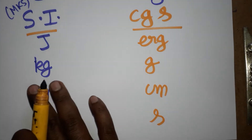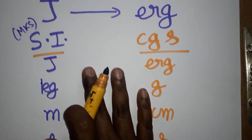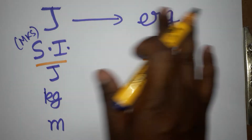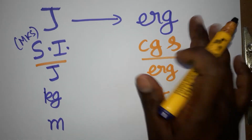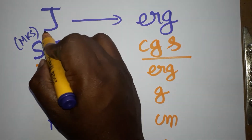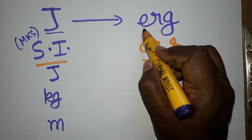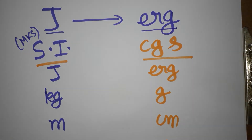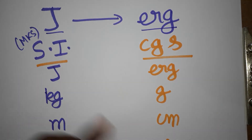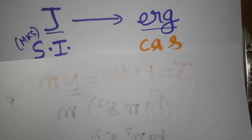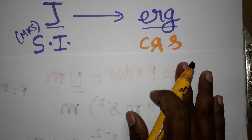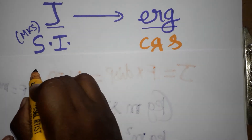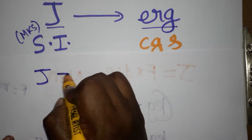Now we are going to convert from the SI unit to the CGS system. The SI unit we call Joules; the CGS system we call ERG. We are going to learn how to convert Joule to ERG by the dimensional analysis concept.